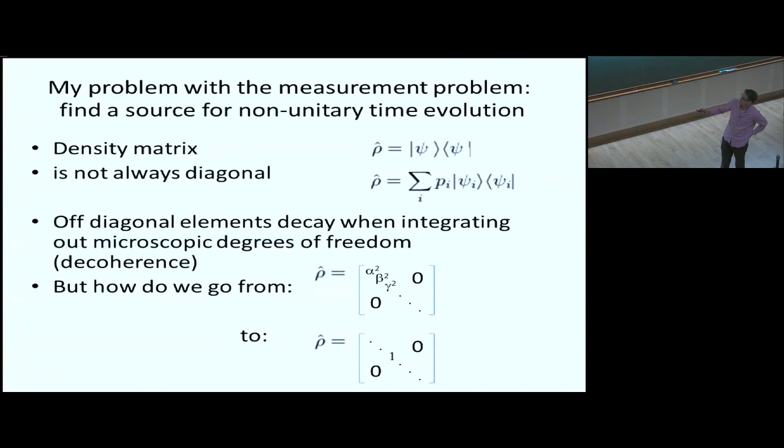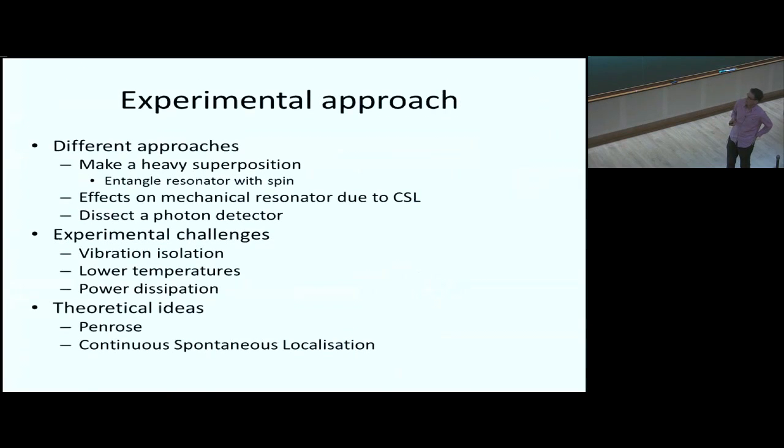So it's really, can we find a non-unitary element that is now missing in the Schrodinger wave equation approach? And so my approach as an experimentalist is try to think of experiments in which we probe this kind of experimental regime.